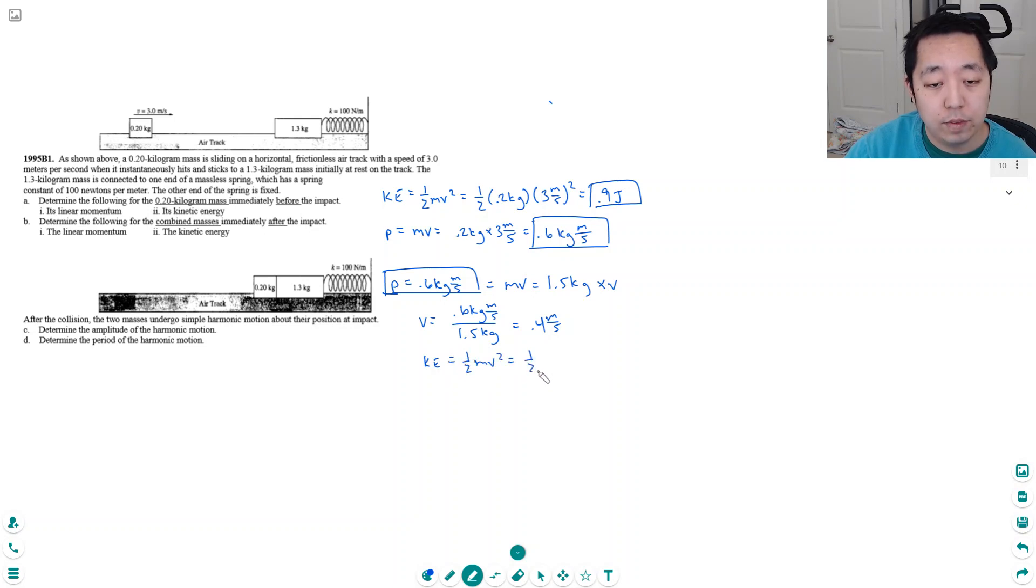One half. The combined mass is 1.5 kilograms and its velocity we just calculated was 0.4 meters per second. Then I square that and I got 0.12 joules. So it lost quite a bit of energy as you can see.